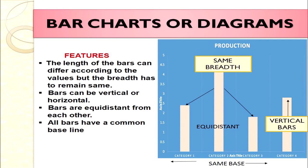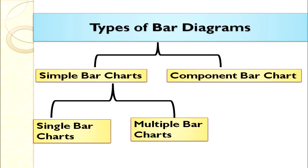The key features of bar charts are: first, the length of the bars can differ according to the values, while the breadth remains the same — you can see all bars have varying lengths but equal widths. Second, these bars can be vertical or horizontal, though vertical is more popular. Third, bars are equidistant from each other. Fourth, all bars have a common base line.